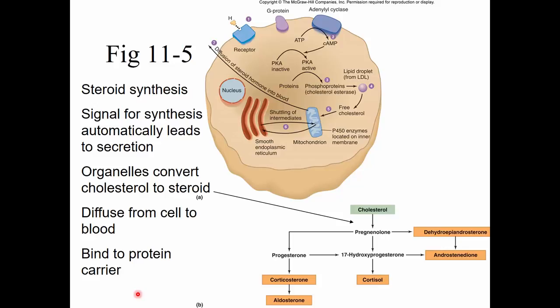How do we make a steroid? A cell gets some kind of signal - for example, FSH is a protein hormone that binds to a receptor and tells cells in the ovary to make estradiol. We harvest cholesterol from LDL, and with the help of the mitochondria and the smooth endoplasmic reticulum, enzymes synthesize the steroid hormone. The steroid hormone then diffuses right out of the cell, finds a carrier protein, and travels in the blood.